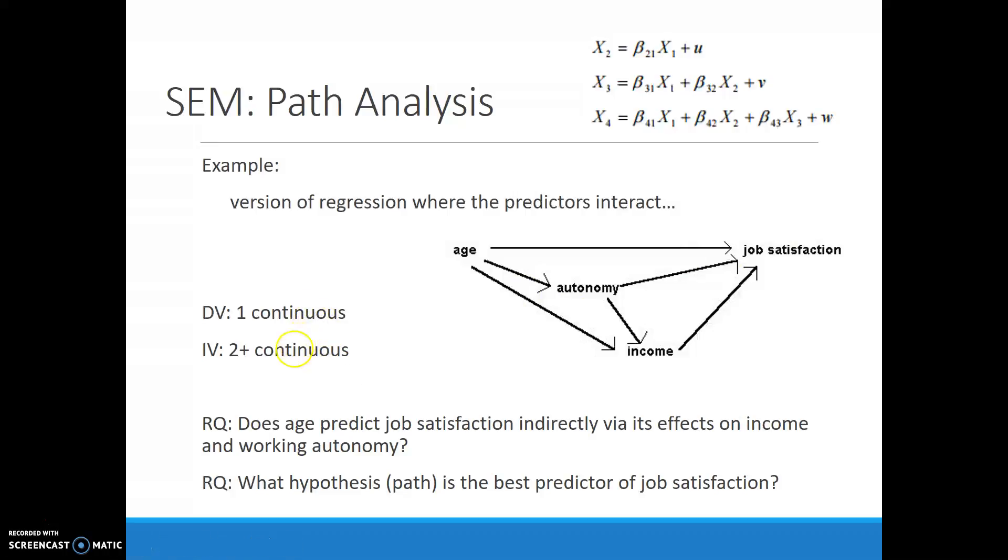One dependent variable and multiple predictors, multiple independent variables. So the research questions can be varied, but here's two examples. So we would be looking at does age predict job satisfaction directly or indirectly via its effect on income and working autonomy? We can also look at what is the best hypothesis. In this case, those would be paths. Which one is the best predictor of job satisfaction? Here we have four different paths to job satisfaction. And these would all be established conceptually based on literature, based on practice, based on all kinds of different ideas. But this all together essentially is our hypothesis. So does the path age to job satisfaction? Is that the best predictor? Or does age go through autonomy to job satisfaction? That's number two. Age through income to job satisfaction? Third hypothesis. Or is it age goes through autonomy, goes through income, and then to job satisfaction? Is that the best path? So four different hypotheses that we are testing at the same time.